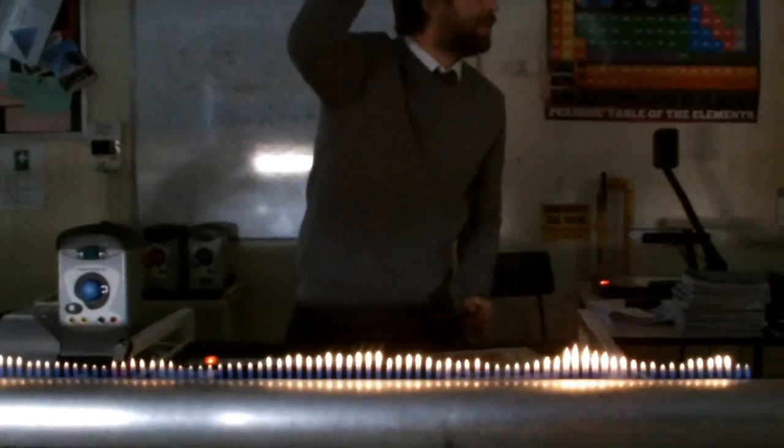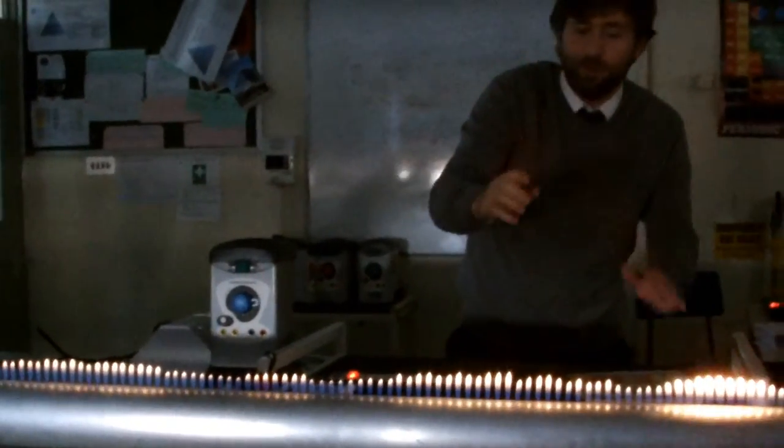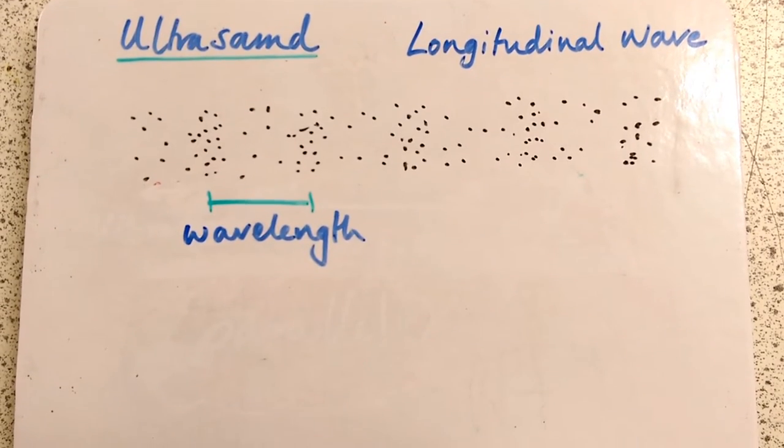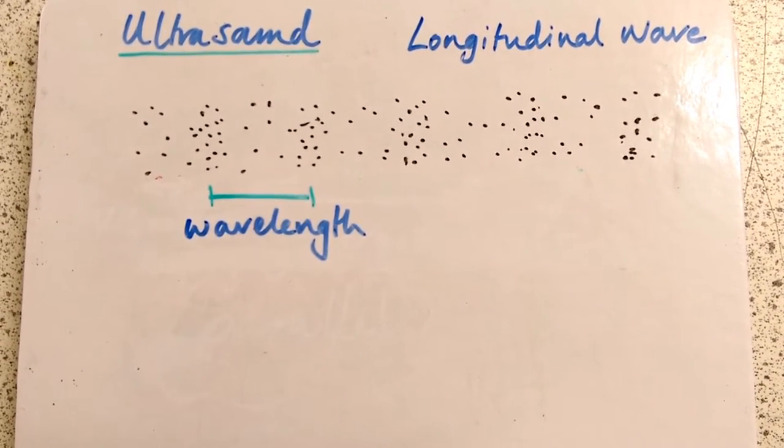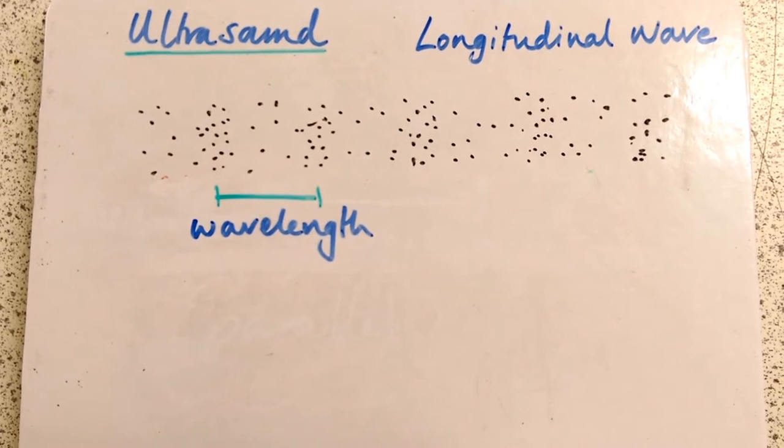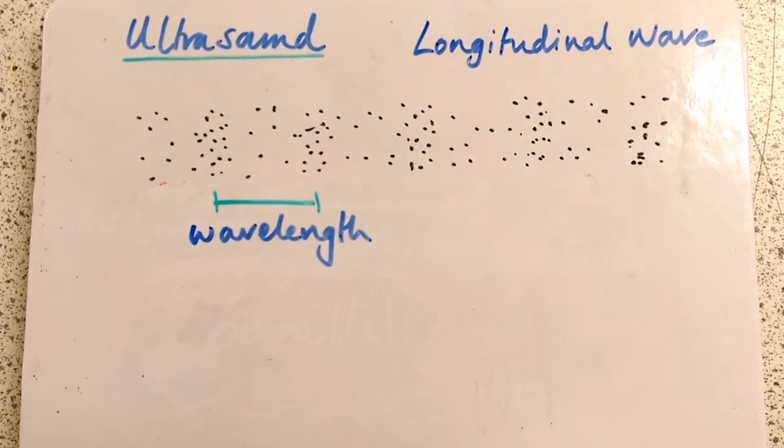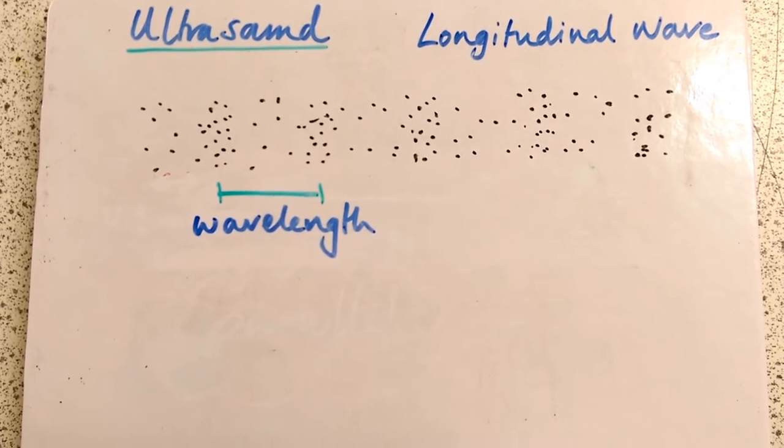So compressions are regions of high pressure where all the particles are close together. Low pressure is a rarefaction. Longitudinal waves still have a wavelength, defined as the distance between two compressions or two rarefactions. Also they have an amplitude. Think about that as how far each particle is moving.